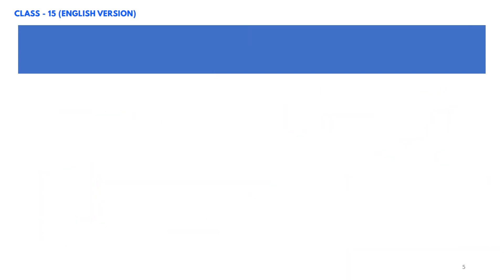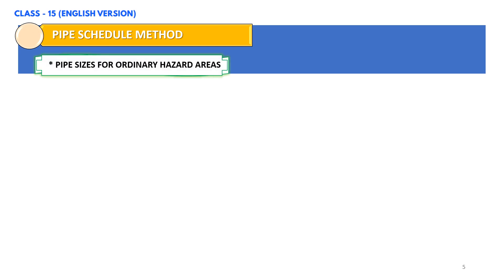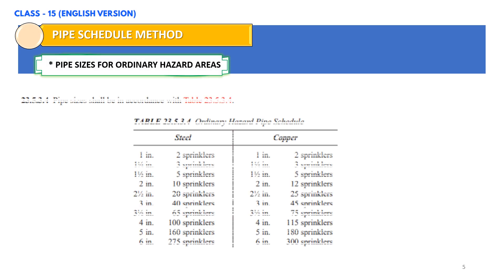In this slide, let us go through pipe sizes for ordinary hazard areas. As we can see on your screen, as per NFPA 13, table 23.5.3.4 shall be used in order to define the pipe size based on the pipe schedule method for ordinary hazard occupancies.